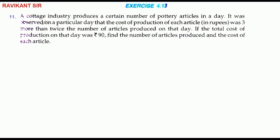A cottage industry produces a certain number of articles in a day. It was observed on a particular day that the cost of production of each article in rupees was three more than twice the number of articles produced on that day. If the total cost of production on that day was 90 rupees, find the number of articles produced and the cost of each article.